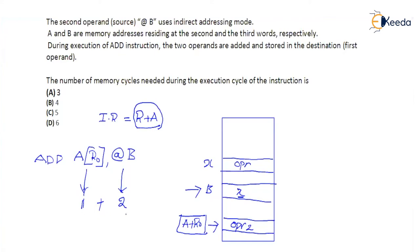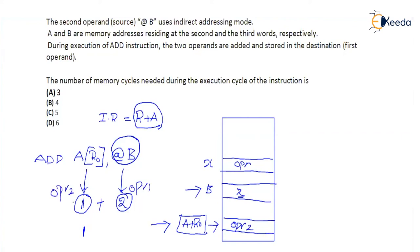After three accesses, both operands are fetched. Now we need to add both operands and transfer the result back to the A(R0) location, which requires one more memory access. So altogether, the total memory accesses equal four: @B takes two memory accesses, A(R0) takes one memory access to fetch operands, and storing the result back to A(R0) requires one more memory access.